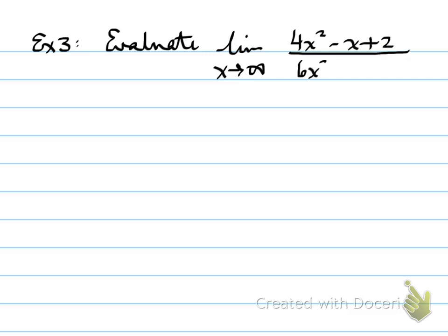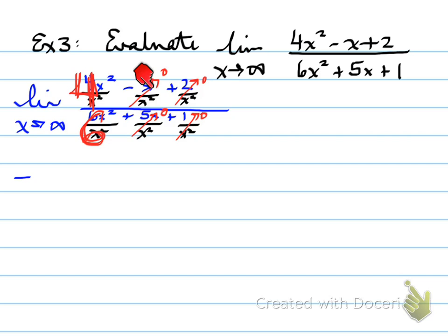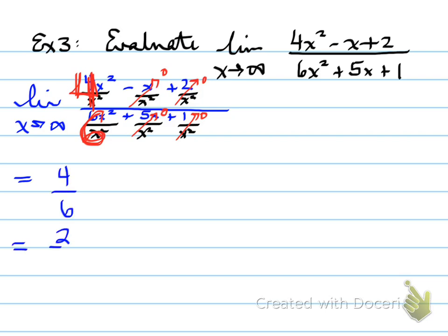Example number 3: evaluate the following limit. Divide the numerator and denominator by the highest degree, which is x squared. We find a very small number over a very large number, approaching 0 for those terms. The remaining terms reduce to 4 on top and 6 on the bottom. So the limit as x approaches infinity of the function is 4 over 6, which reduces to 2 over 3.